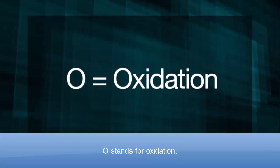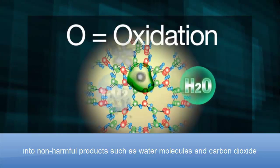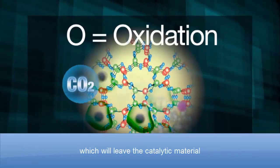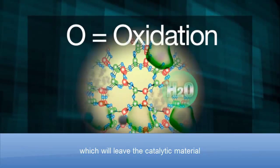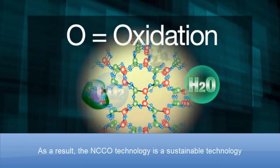O stands for oxidation. Active oxygen is generated, and it's able to oxidize gaseous contaminants into non-harmful products such as water molecules and carbon dioxide, which will leave the catalytic material and regenerate another site for adsorption of pollutants.